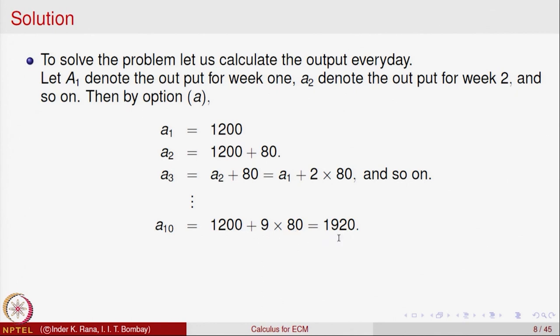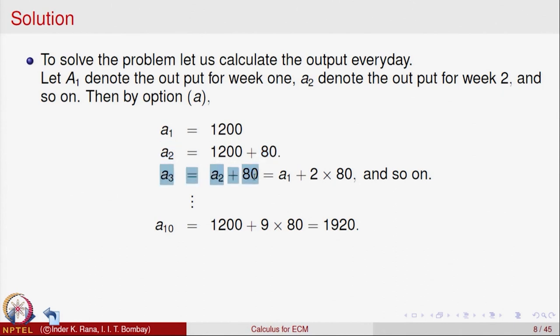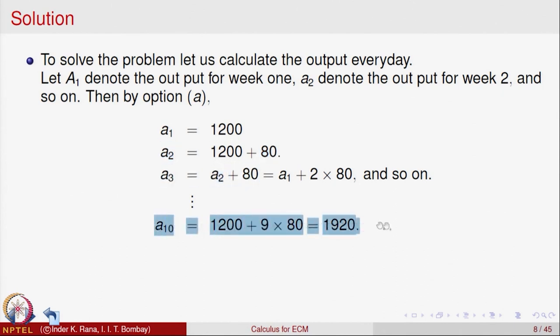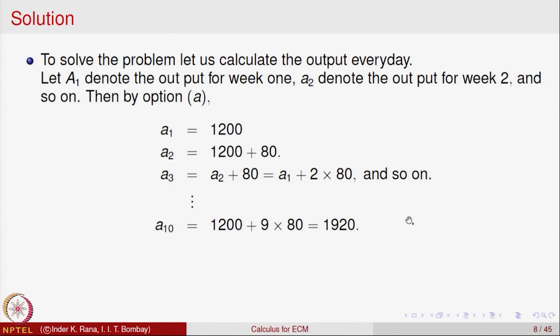So what we have done is generated a sequence of observations: the production in the first week, second week, third week, and so on. We have generated a sequence of numbers which describes the production each week. The point is we have generated a sequence of observations. We will continue this a bit more in the next part of the lecture. Thank you.